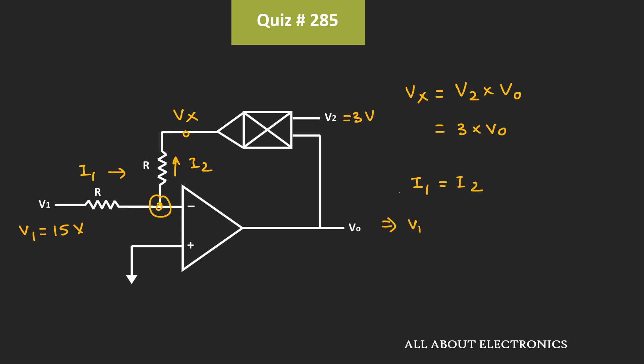That means V1 minus 0 divided by R is equal to 0 minus Vx divided by R. And since V1 is equal to 15V, we can write this expression as 15V divided by R equals minus 3V0 divided by R.